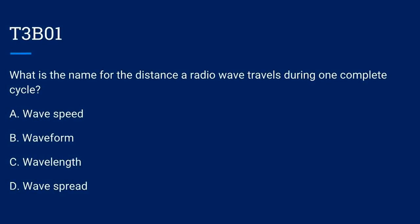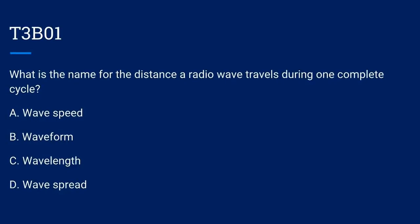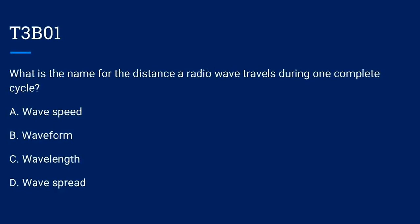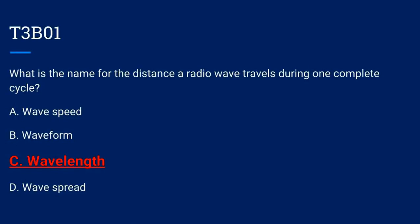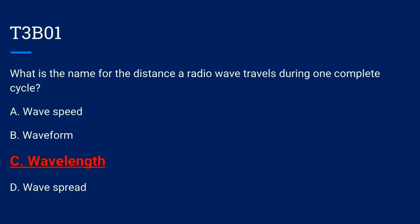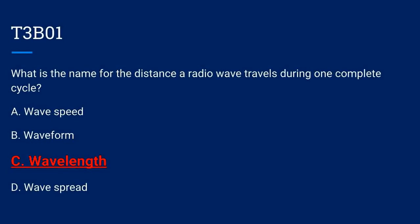T3B01. What is the name for the distance a radio wave travels during one complete cycle? A. Wave speed. B. Wave form. C. Wavelength. Or D. Wave spread. The correct answer is C: wavelength.